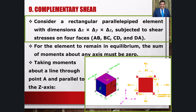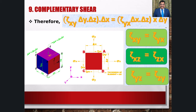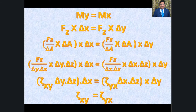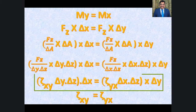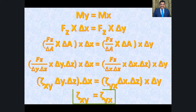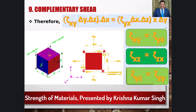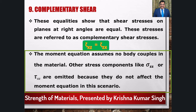Complementary Shear - Consider an elementary rectangular parallelepiped delta x, delta y, delta z. Shear stresses are shown on 4 faces AB, BC, CD and DA in Fig. 1.11. The element is in equilibrium, so the net moment on the element about all axes should be zero. Taking moments about the z-axis: tau(xy) × delta y × delta z × delta x = tau(yx) × delta x × delta z × delta y, which gives tau(xy) = tau(yx). Similarly tau(xz) = tau(zx) and tau(yz) = tau(zy).